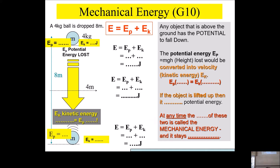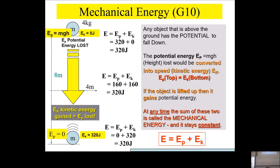Here's an application of the mechanical energy concept. You've got a 4 kilogram ball lifted to a height of 8 meters. What's its potential energy? Using g = 10: potential energy is mgh = 4 × 10 × 8 = 320 joules. So up there you have 320 joules of potential energy.